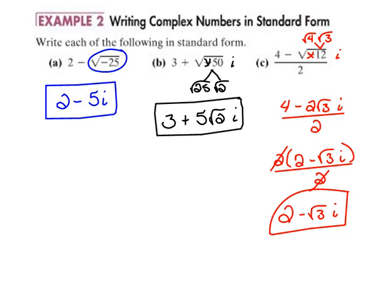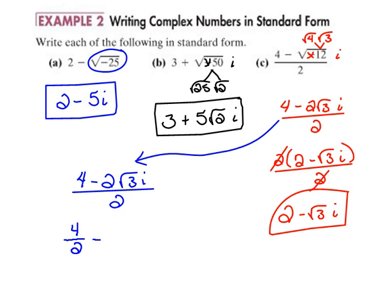Starting back here at the 4 minus 2 square roots of 3 i over 2, another way to look at this would have been to separate out your terms over your denominator. We could have said 4 over 2 minus 2 square roots of 3 over 2 i, just using each one of those terms, and since this is just a number I just put that in front of the i.